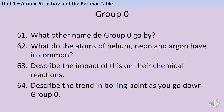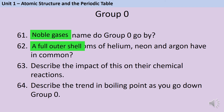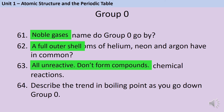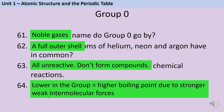Group 0 are also known as the noble gases. The atoms of helium, neon and argon all have full outer shells, which makes them very unreactive and unlikely to form compounds. As you go down the group, the boiling points increase due to the increased strength of the forces between the atoms.